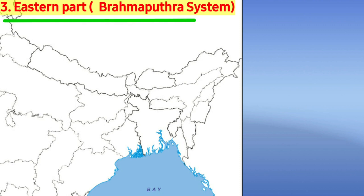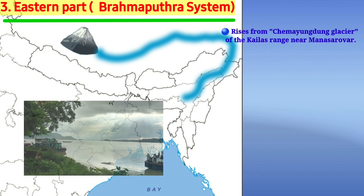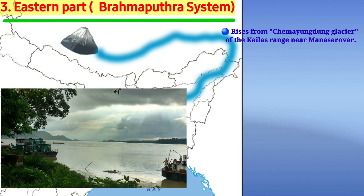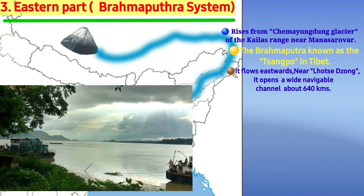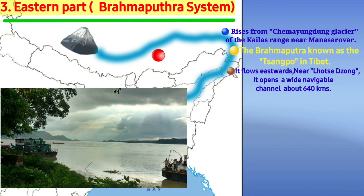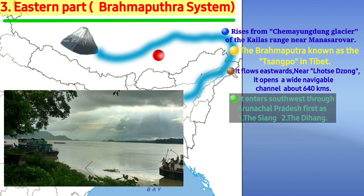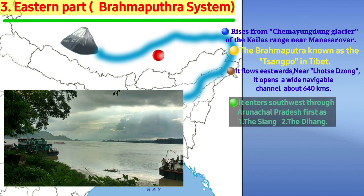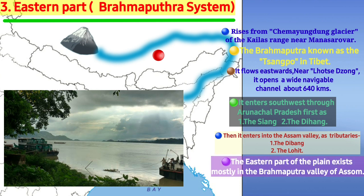The Eastern part of the Indo-Gangetic Plain has the river course of the Brahmaputra. The Brahmaputra takes birth from Chamayangtang Glacier in the Kailash Range at Lake Manasarovar. It is also known as Tsangpo in Tibet. It flows eastwards, and at Namcha Barwa it opens out a navigable channel of about 640 kilometers. Then it enters southwest through Arunachal Pradesh as Siang and Dihang, after which it enters the Assam Valley with tributaries Dibang and Lohit. The Eastern part of the Indo-Gangetic Plain mainly exists in the Brahmaputra Valley of Assam.